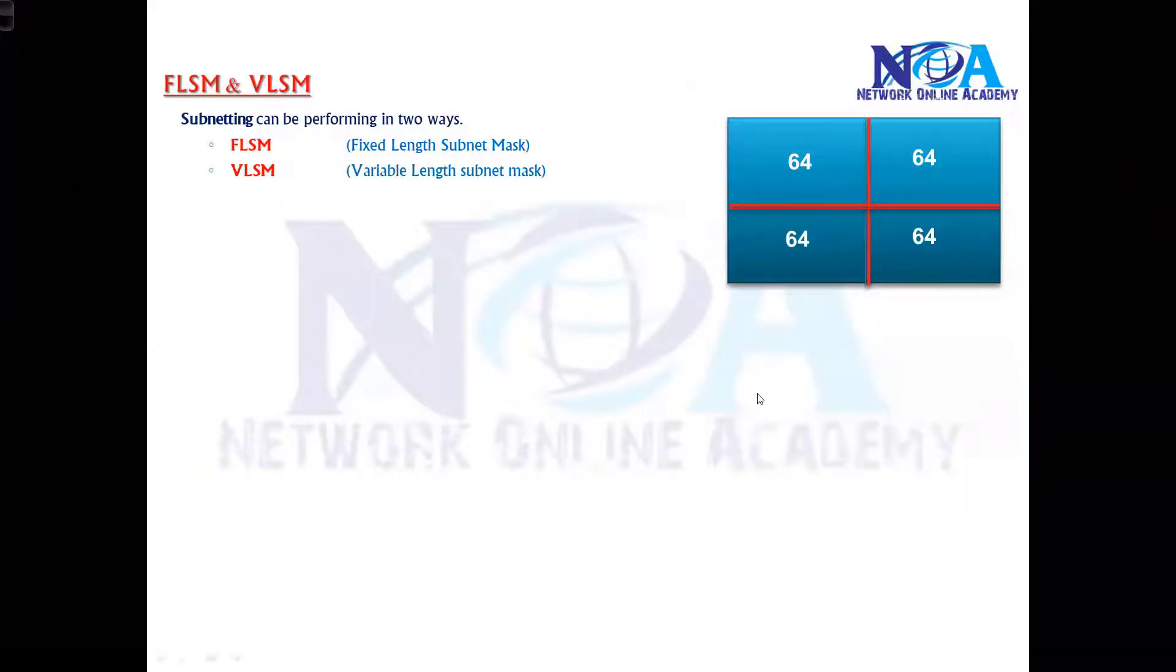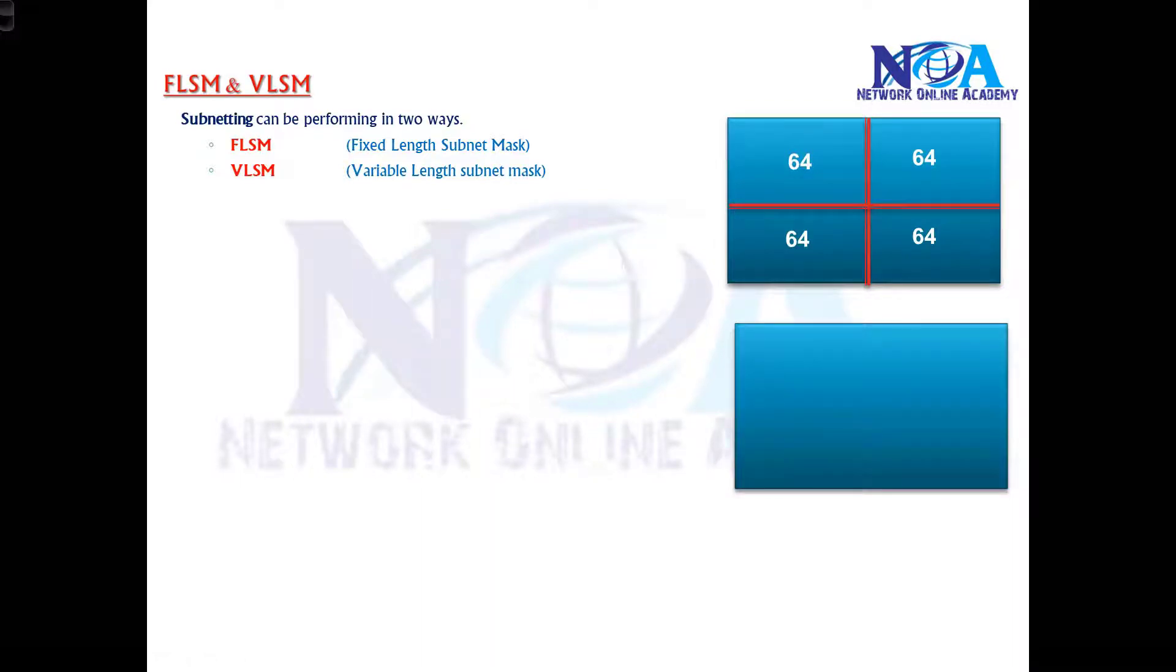In VLSM, basically you may not get a requirement all the time equal. So in VLSM what we'll do is we'll be dividing in variable sizes—may be same, may not be same—just like your kitchen, bathroom, hall, or bedrooms. There will be variable sizes because of the requirements.